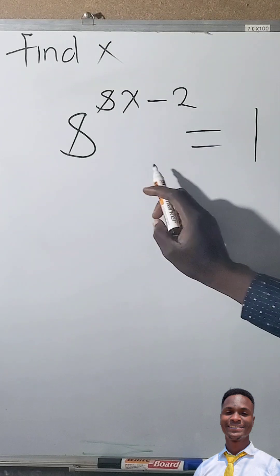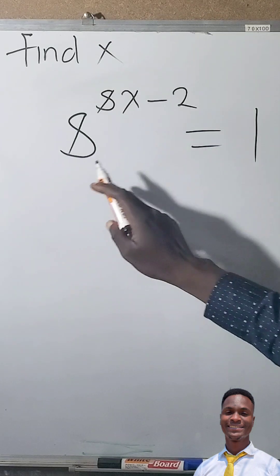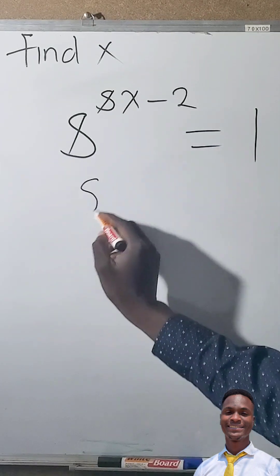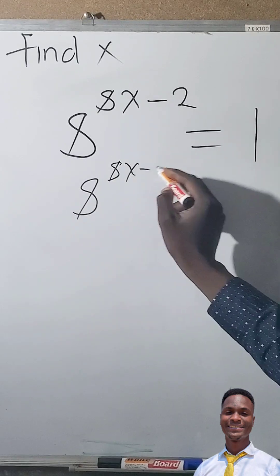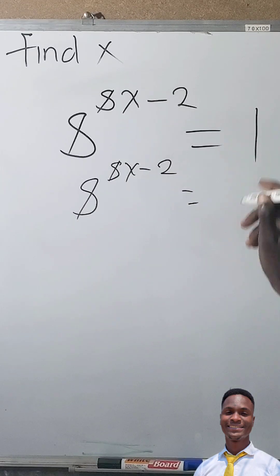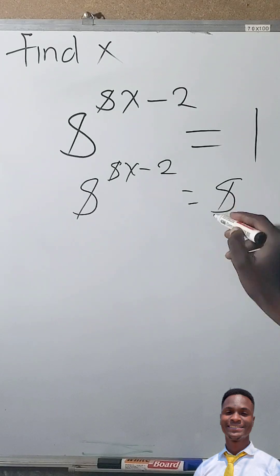So to find the value of x here, we need to make sure that bases are the same. We're going to say 8 to the power 8x minus 2. This one is the same as 8 to the power 0.